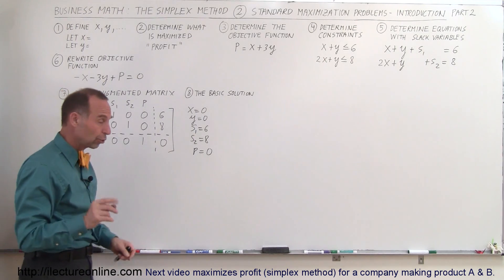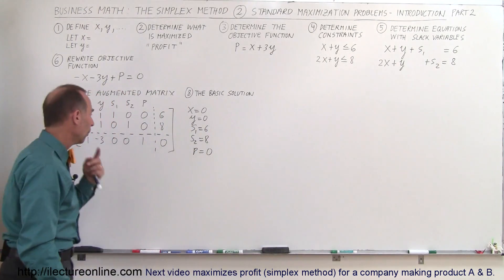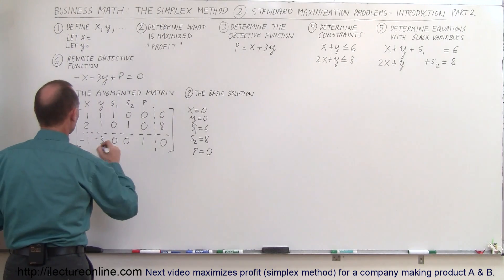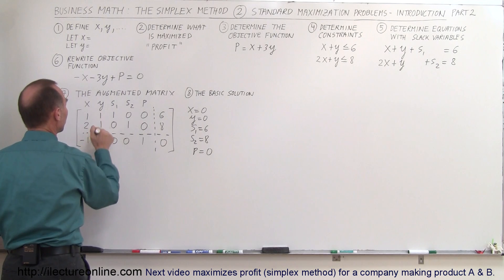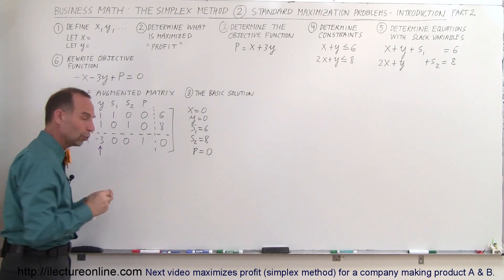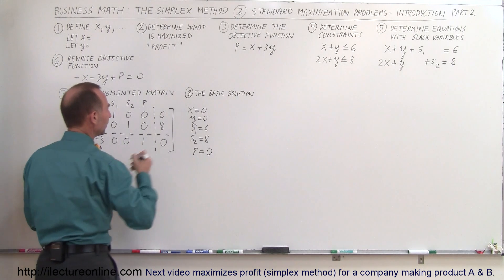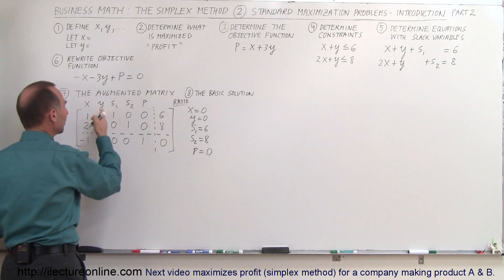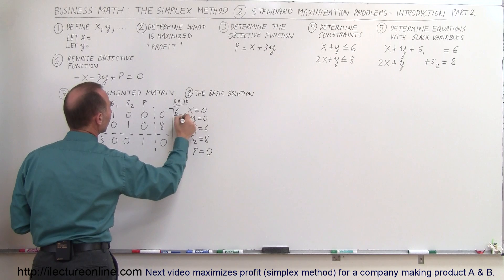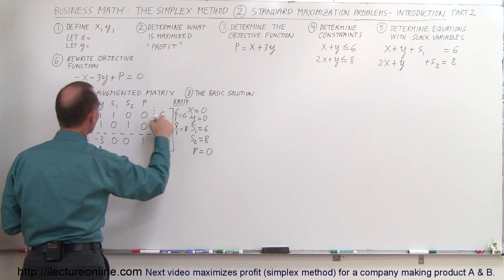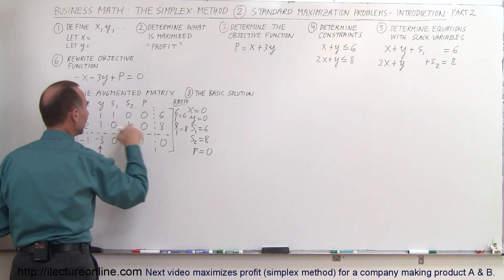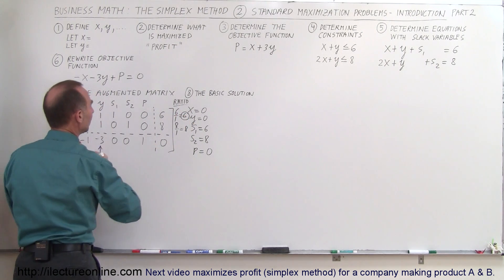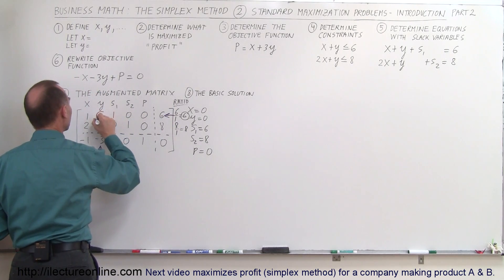Now we determine where to pivot. We look at the bottom row and find the largest negative number, which is negative 3 — that identifies the pivot column as the y column. To determine the pivot row, we compute the ratio of the constant divided by the number in the pivot column: 6 divided by 1 is 6, and 8 divided by 1 is 8. We choose the row with the smallest ratio, which is row 1 (ratio 6), so we pivot around that element.